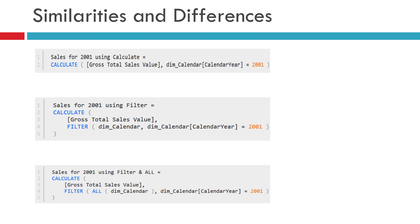In the first measure, we have used the simple filtering method inside CALCULATE to apply that particular filter. In the second measure, we have used the FILTER function and again used the same simple filter method to apply the filter condition. And finally, in the third measure, we have used the ALL function inside the FILTER function while referring to a calendar table.